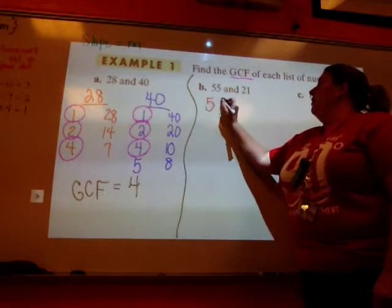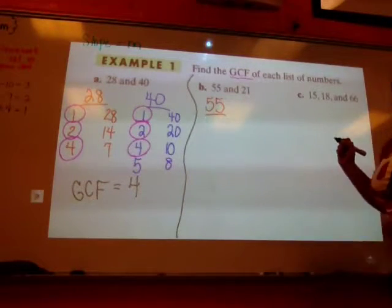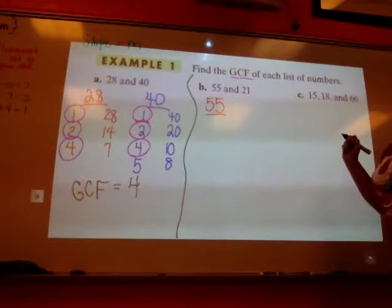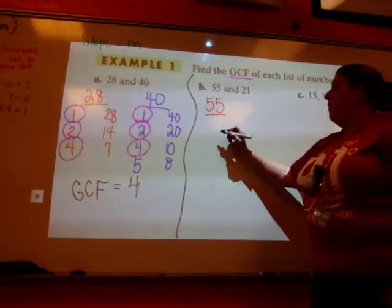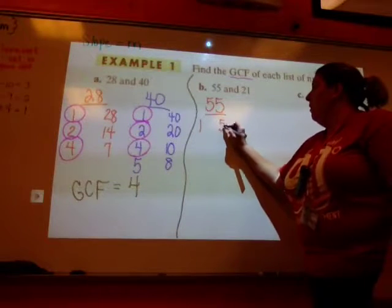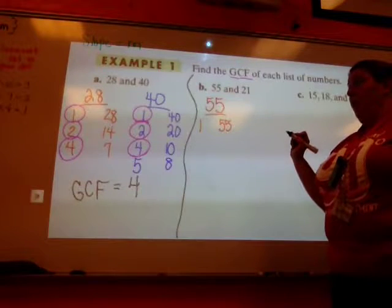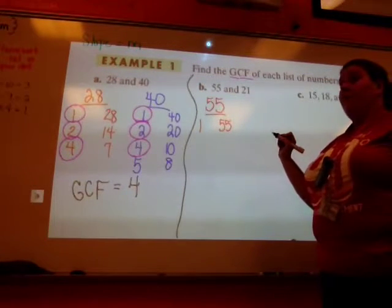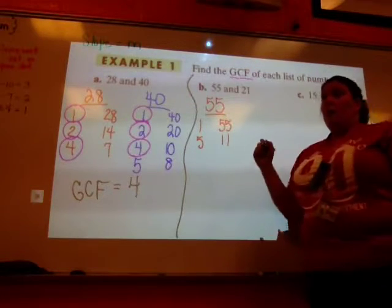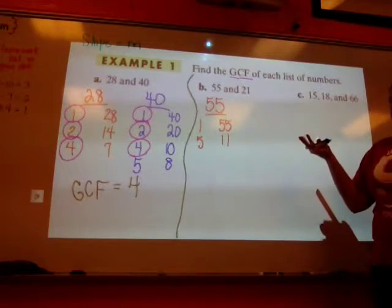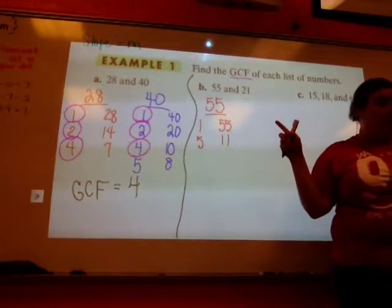So jot down B. It's 55. What are my factors of 55? 1 and 55. 2? 3. No. 4? No. 5? Yes. 5 and 11. No 6, no 7, no 8, no 9, no 10. We're back, we're making our turn back to 11. Everybody agree with that?